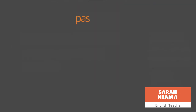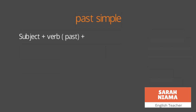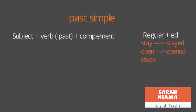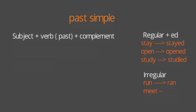The rule of the past simple tense is: subject plus verb in the past plus complement. We should turn the verb to the past. If the verb is regular, we add 'ed' to the end — like 'stay' becomes 'stayed', 'open' becomes 'opened'. If the verb is irregular, there is no fixed rule — like 'run' becomes 'ran', 'meet' becomes 'met', 'send' becomes 'sent'.